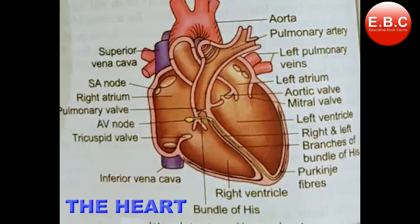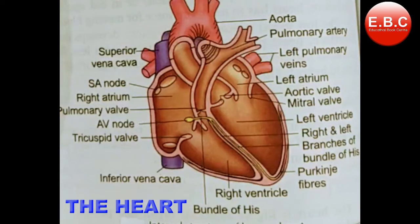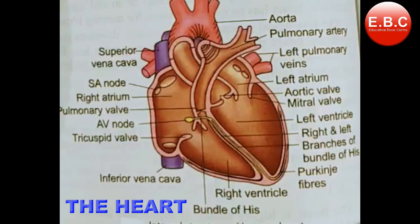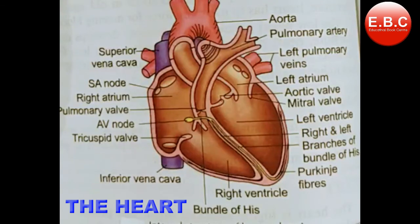Valves also play a very important role in the heart, and there are four in number: namely the tricuspid valve, bicuspid valve, aortic semilunar valves, and pulmonary semilunar valves. As you can see in the figure in front of you, which shows the internal structure of the human heart, you can also see the SA node, which is called the pacemaker of the heart.